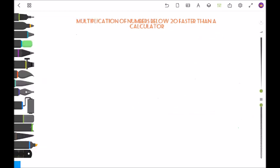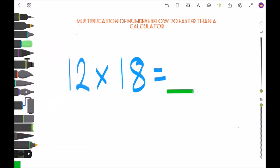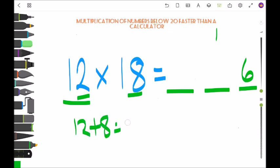Another example is 12 times 18. Last number, 2 times 8 is 16, so 6 carry 1, and then 12 plus 8 equals 20 plus 1, 21.